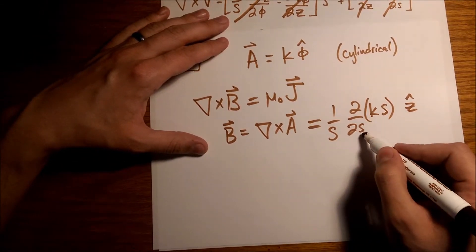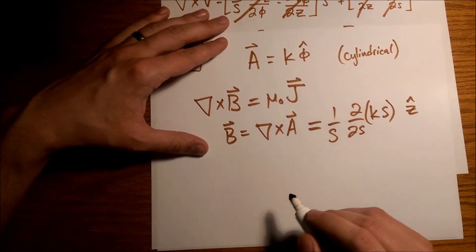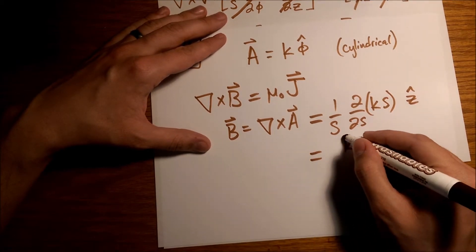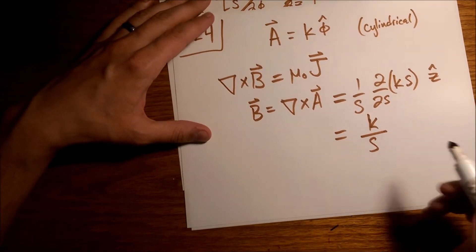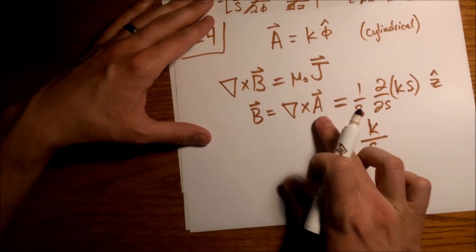And then this is multiplied by the z unit vector. Alright, so partial of s with this quantity here is just k, so we just get a k over s. Alright, so we're halfway done, we've taken the curl of A and gotten our B.